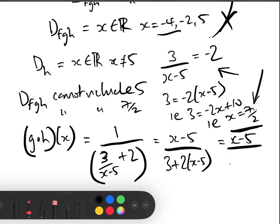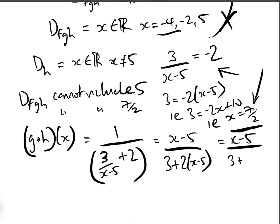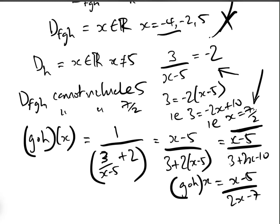That simplifies to (x minus five) over (three plus two x minus ten), i.e. (x minus five) over (two x minus seven). So that is g∘h(x).